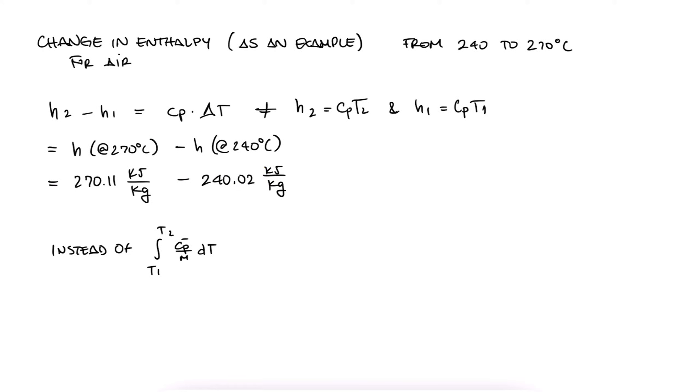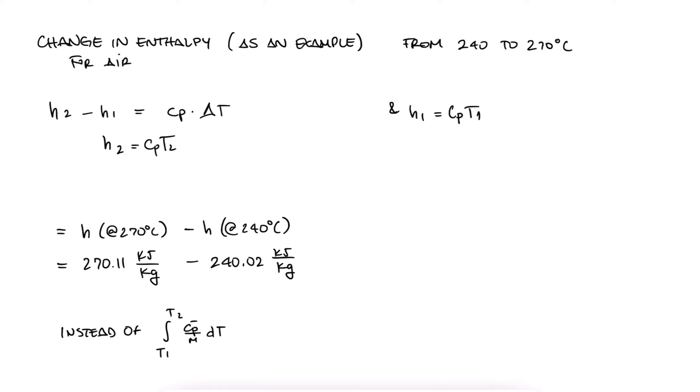The answer to that question is that the values we see are really the enthalpy change from a reference temperature to the temperature we're interested in, and we don't even need to know what that reference temperature is. If we're looking for the change in enthalpy between 240 and 270, we're really finding the area under the curve for Cp versus T.